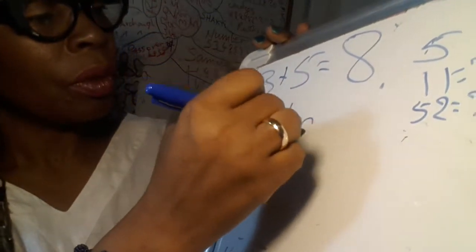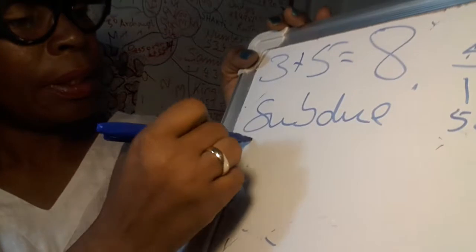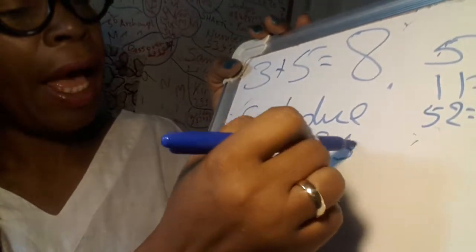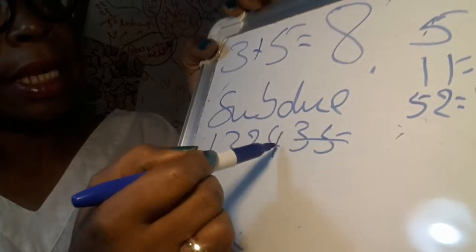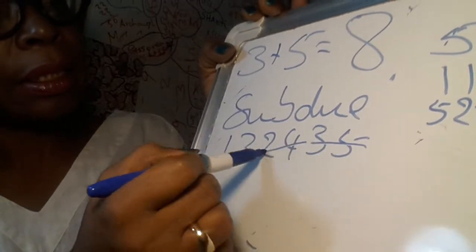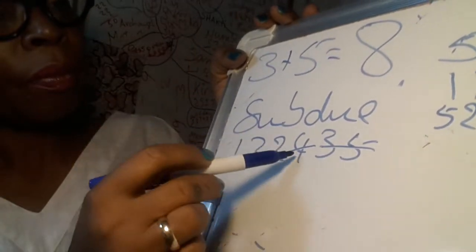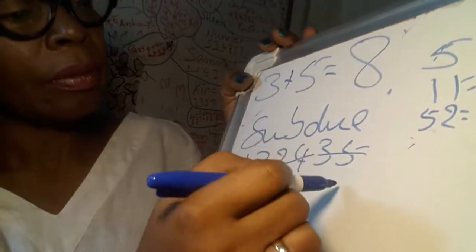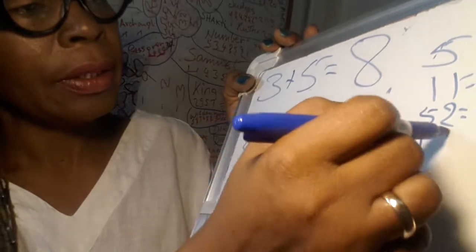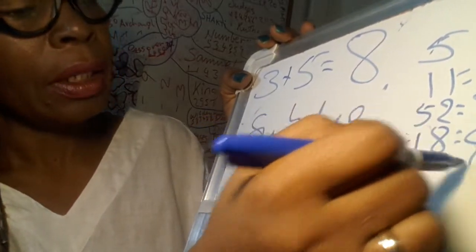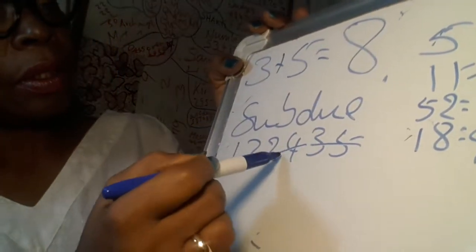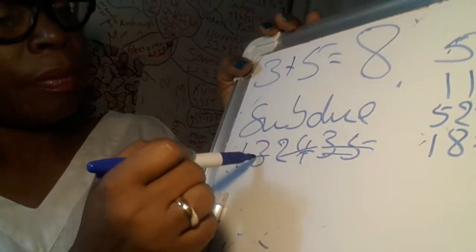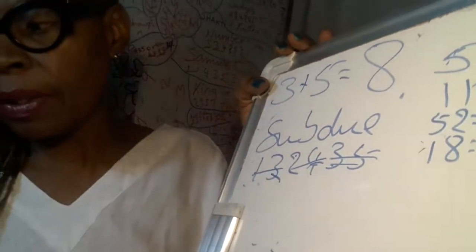Let's do subdue. This is one, three, two, four, three, five. This is eight, and six is fourteen. And fourteen plus four is eighteen. So that is eighteen equals nine.